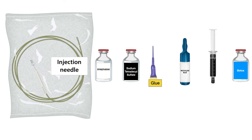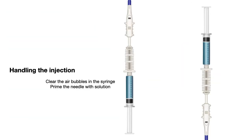The dead space of the injection needle is anywhere between 1.5 to 2 cc. That is important because when you take any of these substances — epinephrine, sodium tetradecyl sulfate, glue, methylene blue or indigo carmine — into your syringe, you fill the syringe with the substance and the first step is to clear the air bubbles by facing the syringe up and slowly pushing the plunger.